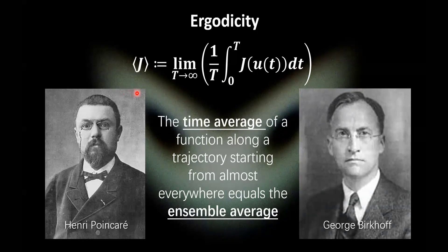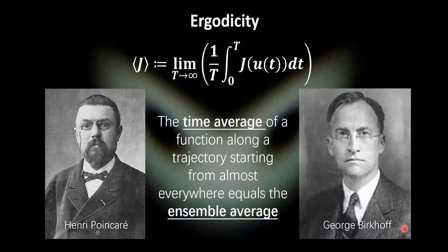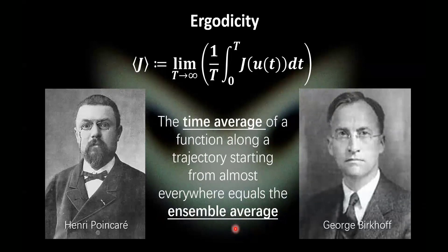Ergodicity says that this j, this bracket j — the infinitely long time average of j — does not depend on the initial condition. If you start from almost any initial condition u at time zero, you would obtain exactly the same infinitely averaged j. And it is equal to an ensemble average. If you start an ensemble, as long as the ensemble has a density, you evolve the ensemble for a long time and average j on the set of ensembles, you would get the same average.